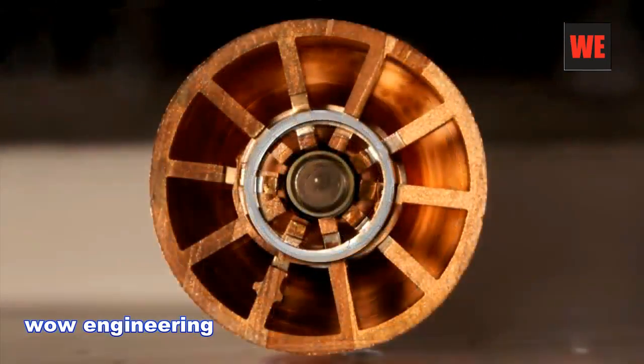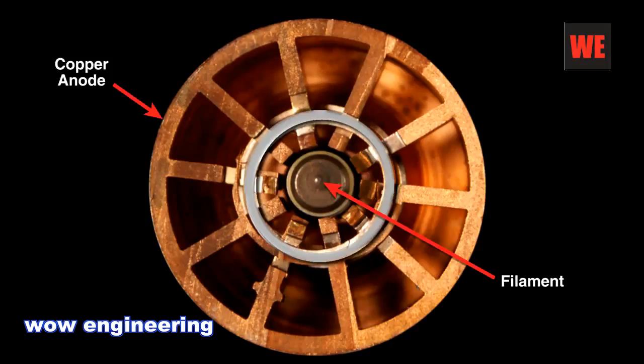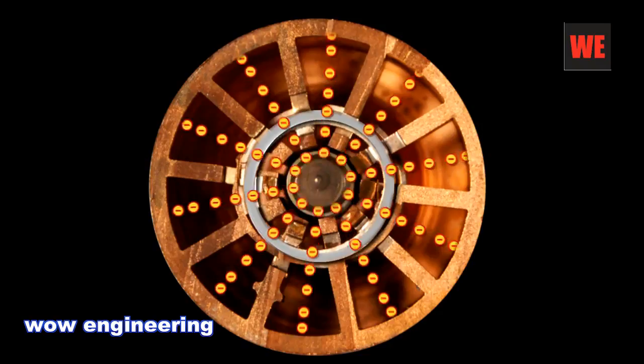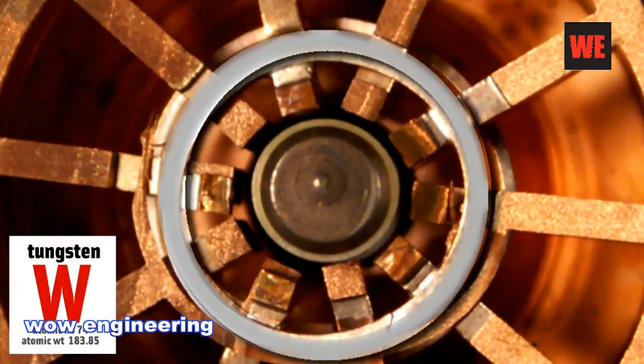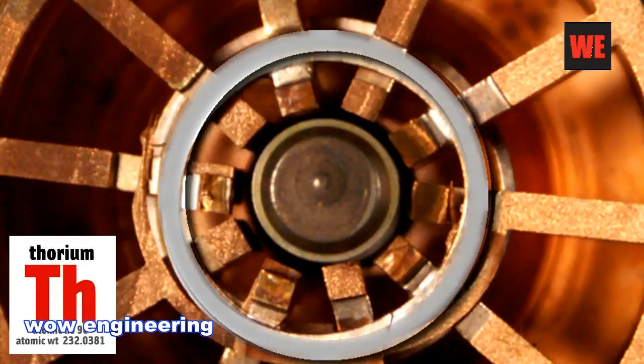You apply a large voltage across both the inner filament and the circular copper outside. This voltage boils electrons off the center filament and they fly toward the circular copper section. The filament is made from tungsten and thorium. Tungsten, because it can withstand high temperatures, and thorium, because it's a good source of electrons.